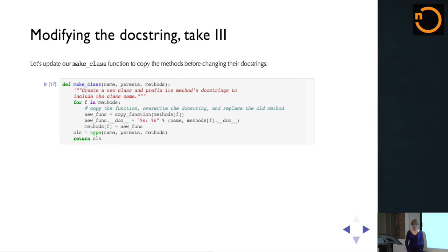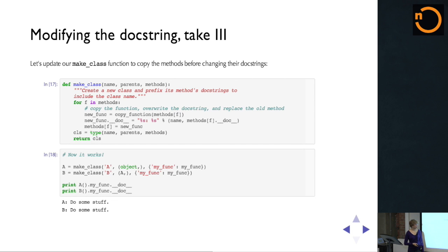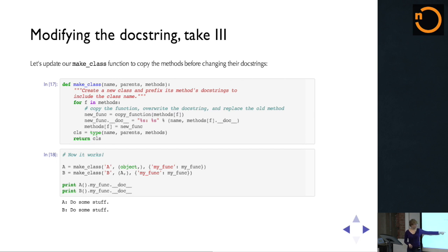Take three — we'll try it again. We're going to modify our makeClass function to, before modifying the docstring, also copy the function that it's been given. Then create the class using these new copied functions. And hopefully this should work, and in fact it does. Here we're making class A and making class B — they both take myfunc, which is the same object. But because this makeClass function now copies the functions, we get different docstrings for the two different methods.